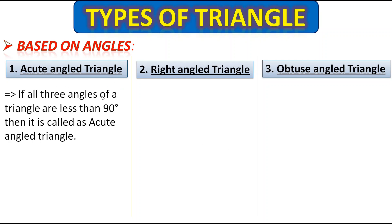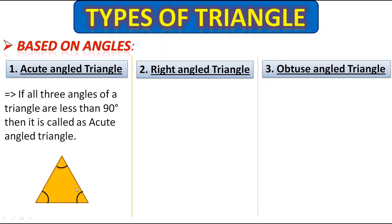If all three angles of a triangle are less than 90 degrees, meaning all three are acute angles, then it is called an acute angle triangle. Here this triangle has all three angles less than 90 degrees, so this type of triangle is called an acute angle triangle.